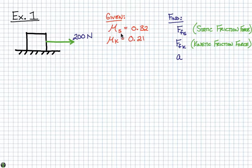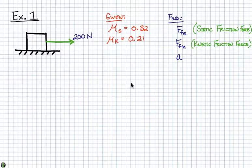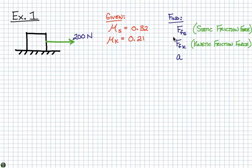We know that the static coefficient of friction, which is the ratio of the frictional force to the normal force, is 0.32, and the kinetic coefficient of friction is 0.21. What they're asking us to find is the actual static force of friction and the actual kinetic force of friction — the force that resists any change in motion from rest, and the force that resists motion once it is moving. Lastly, they want to know what is the acceleration of this object.